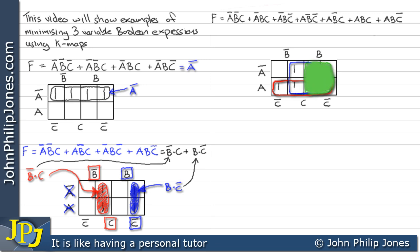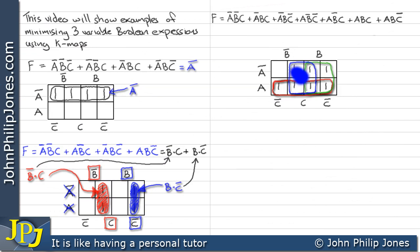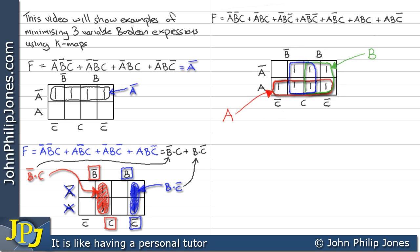We'll shade in the green loop so we can clearly see it. It should be obvious that this loop is entirely in the region of B. It overlaps not A and A so we discount that, likewise C overlaps so we discount that, and none of the loop is in not B so we get rid of that as well. Concentrating on the blue loop, it overlaps not A and A, likewise the B areas. It is clearly in the area of C and no part of it is in not C. So we have loop A, loop B, and loop C. The Karnaugh map has allowed us to minimize the Boolean expression to A OR B OR C.